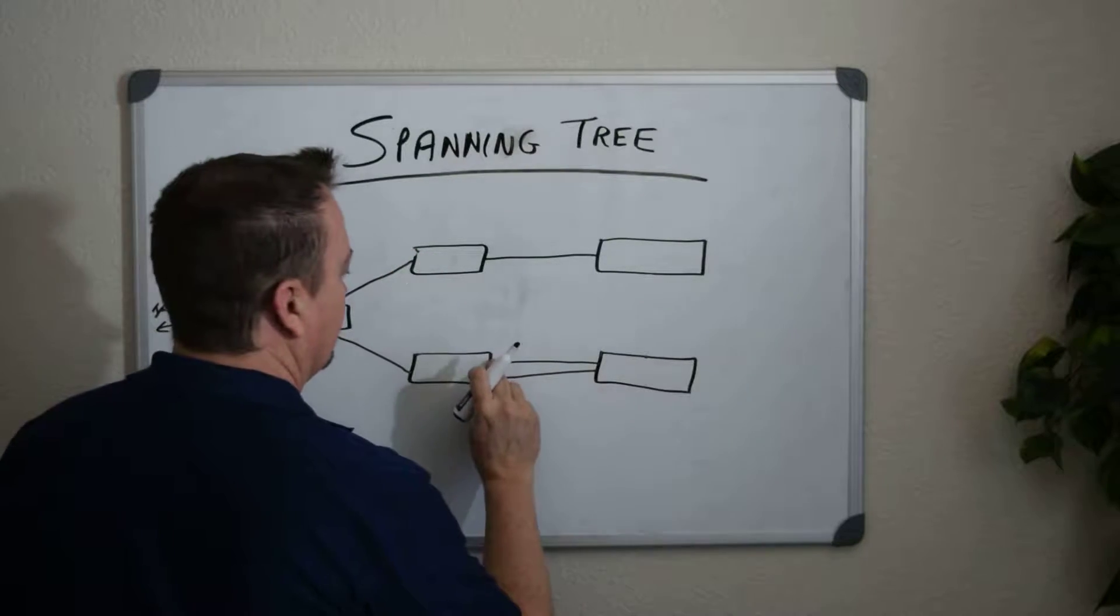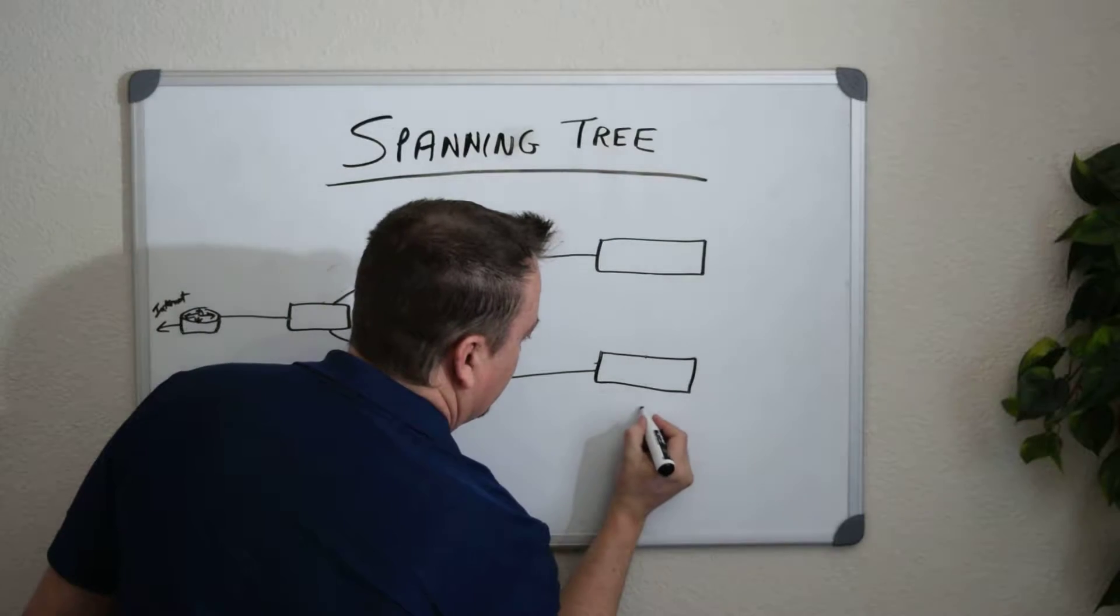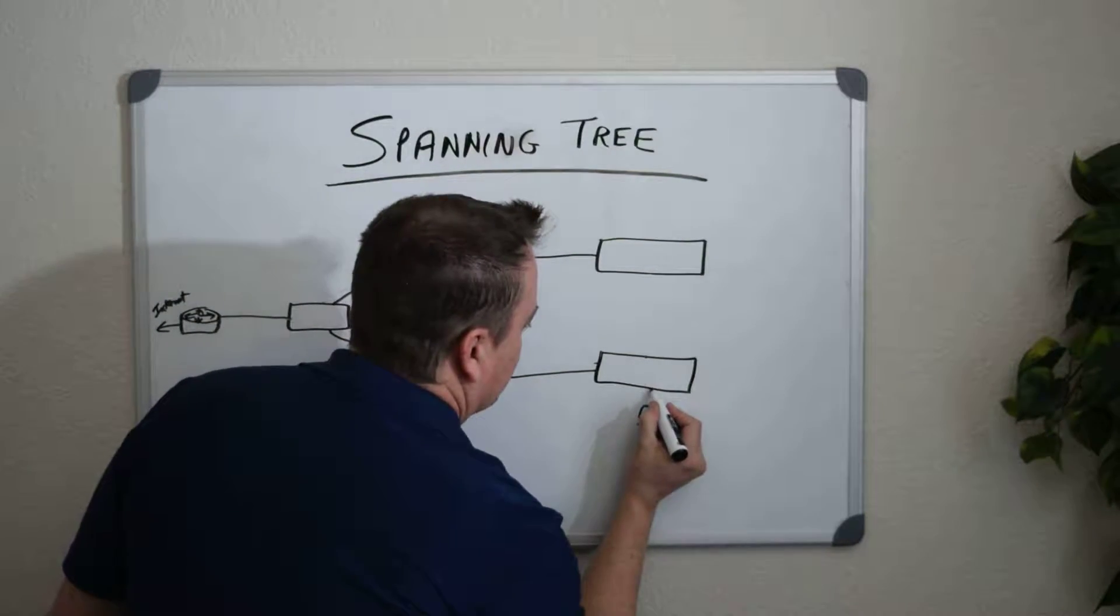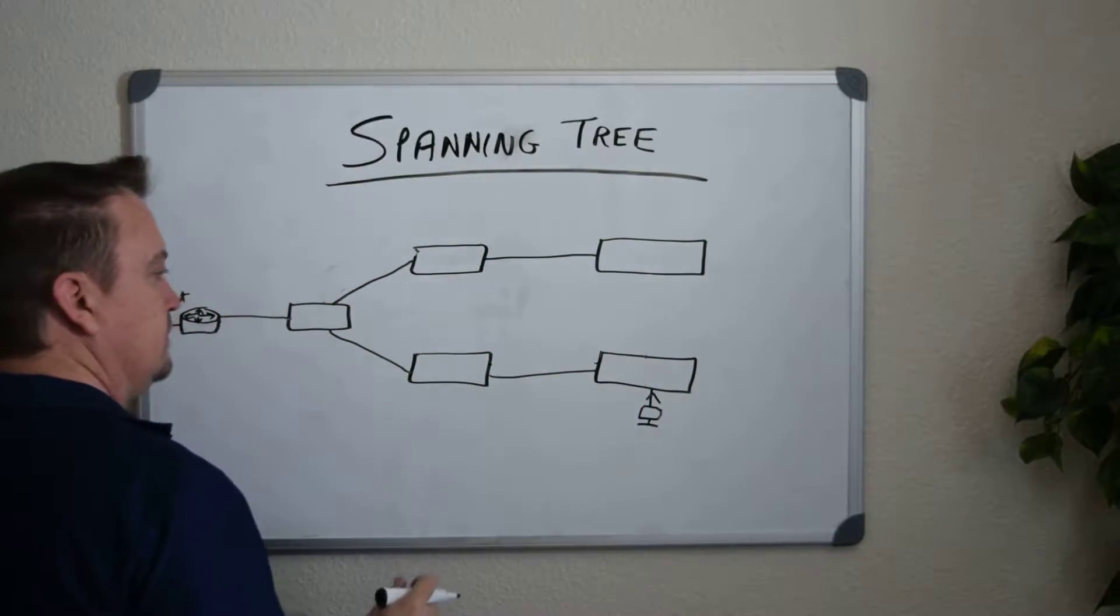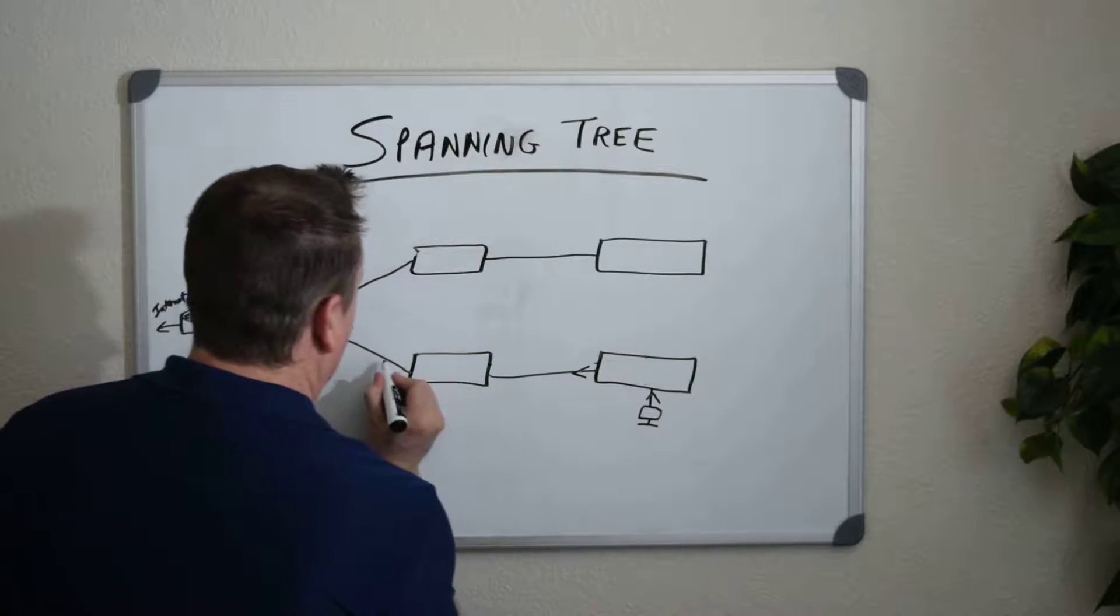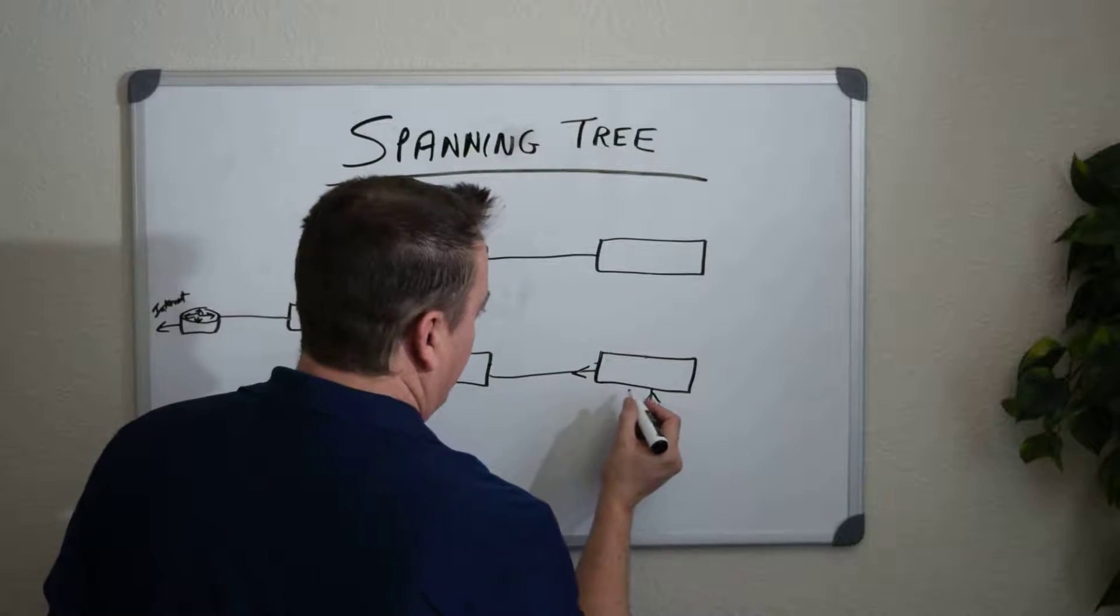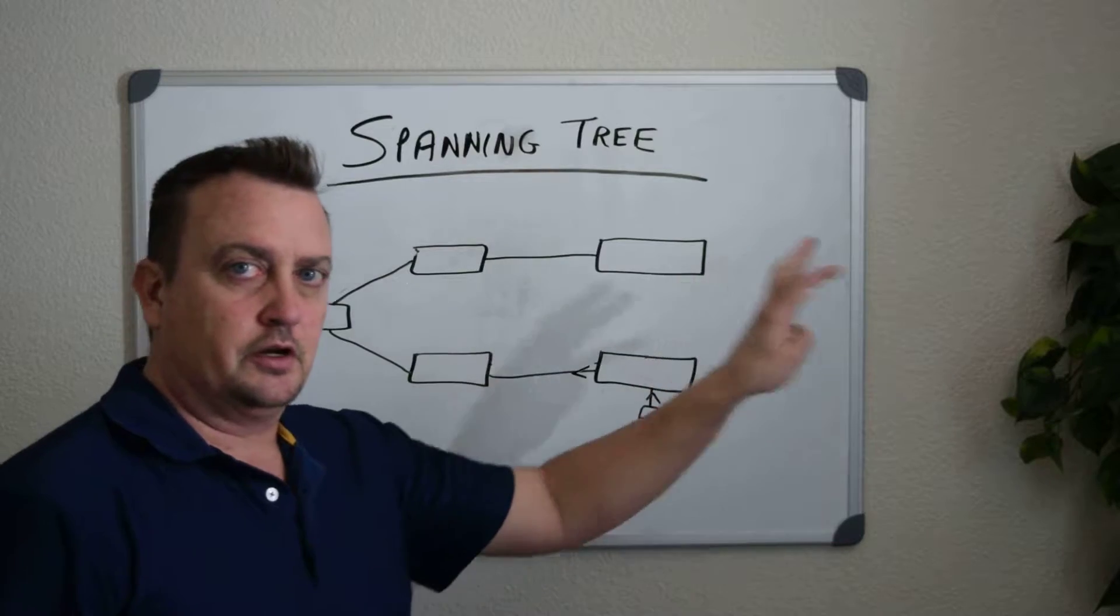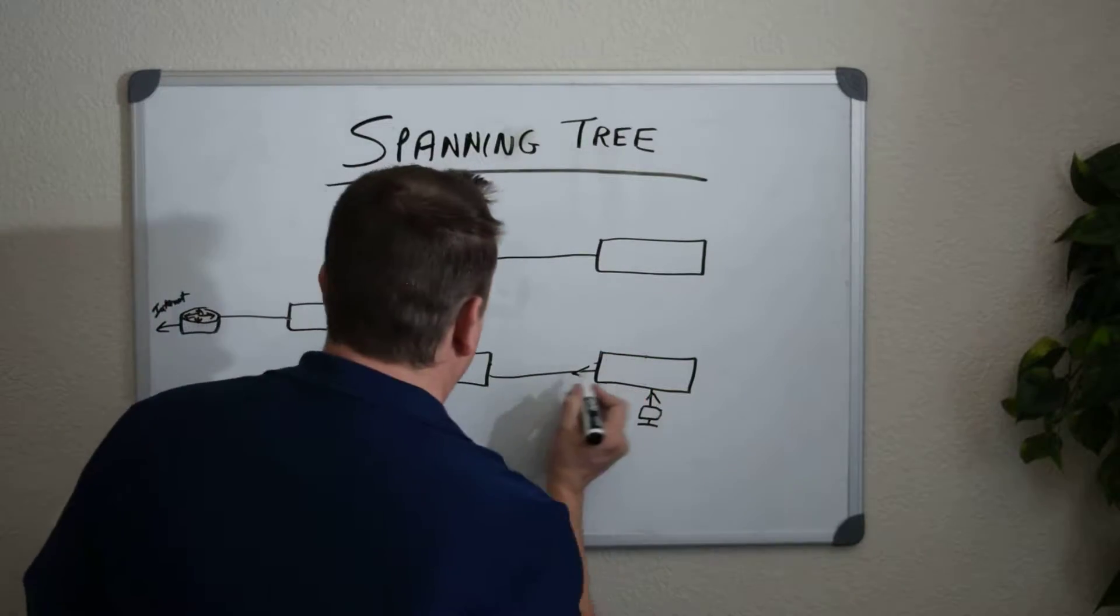When you get a broadcast in on a switch, let's say you have a workstation down here connected to the switch, and it sends an ARP request in, that's a broadcast. What that switch does is it takes that broadcast and sends it out every other interface than the one it came in on. If it has multiple connections here, it will send that broadcast out to all those other connections, all those other devices. In this case, we just have the one other switch connected, but it sends that out here.